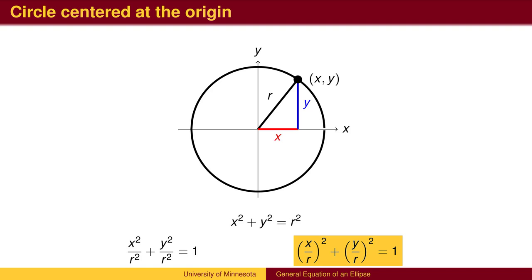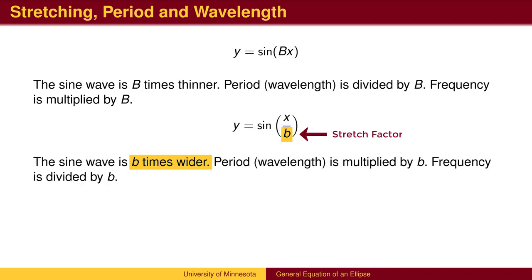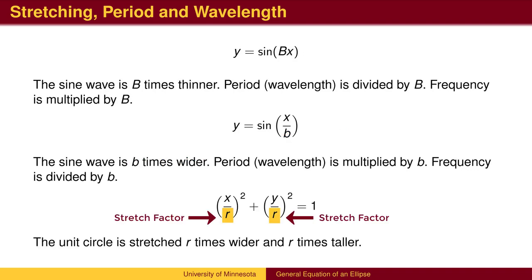We do this to compare transformations of the circle to the transformations of waves. Recall that a multiplier inside the parentheses with the x makes the waves thinner. If instead we divide, the wave will become wider. The same is true for the circle. We can think of a circle with radius r as a circle of radius 1 that has been stretched by a factor of r both horizontally and vertically.